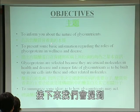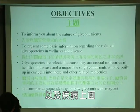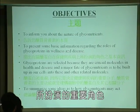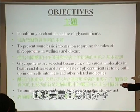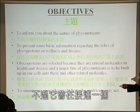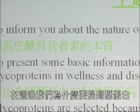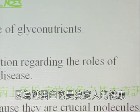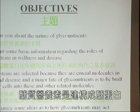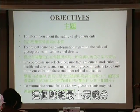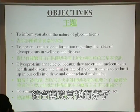I also want to give you some basic information regarding the roles of glycoproteins in wellness and disease. Glycoproteins are proteins that have one or more sugars attached to the protein. They are selected because they are crucial molecules in health and also many diseases, and the major fate of glyconutrients is to be built up in our cells into the sugar chains of glycoproteins.